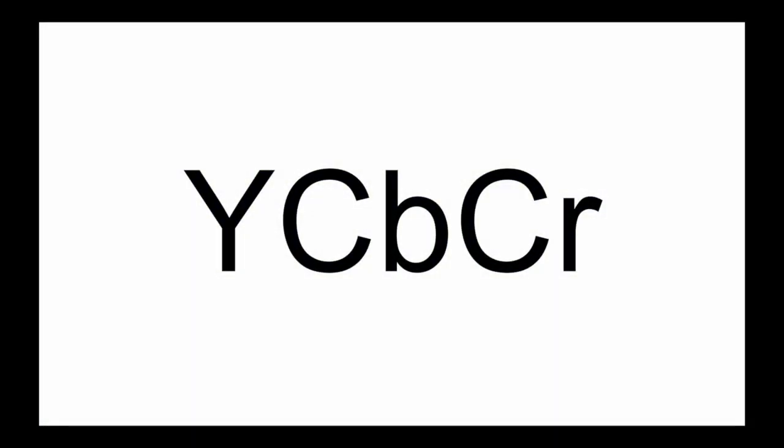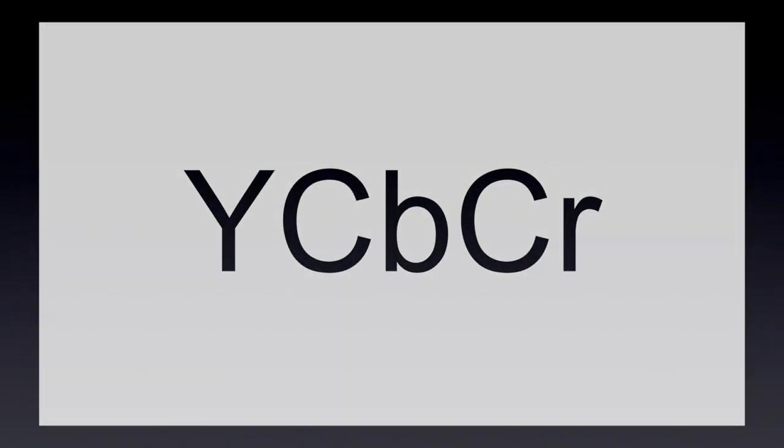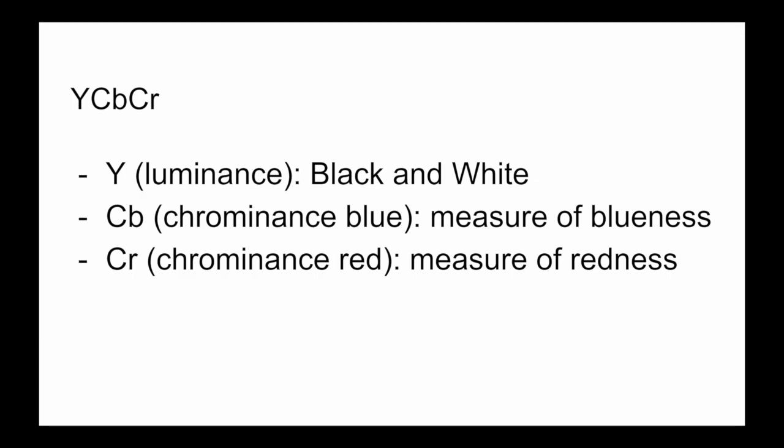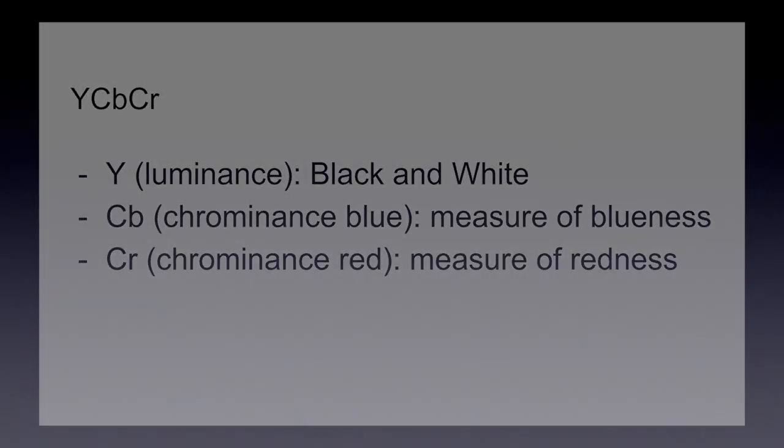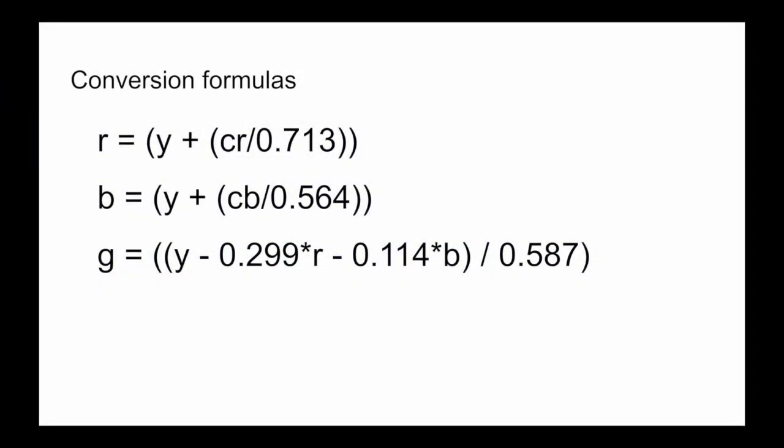The color space that we are converting into is called YCbCr. This color space has three channels. Y meaning luminance, Cb meaning chrominance blue, and Cr meaning chrominance red. The luminance channel is just a grayscale version of the image. It's formed using this formula, where R, G, and B are the red, green, and blue channels respectively.